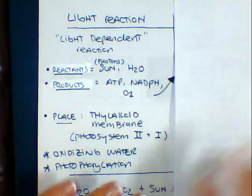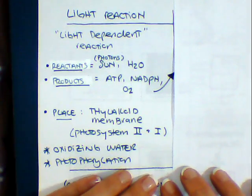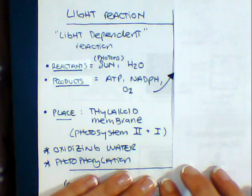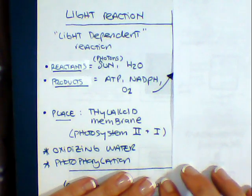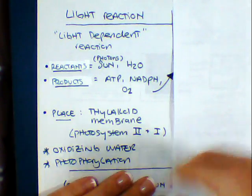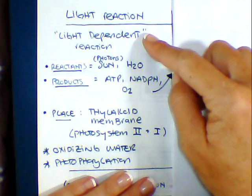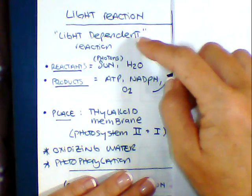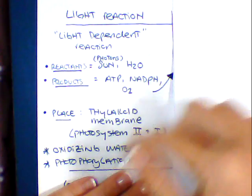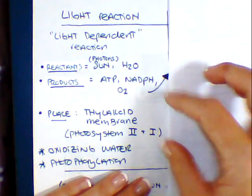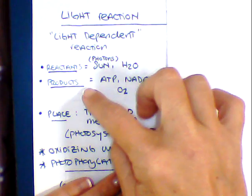Before we start with anything, let's go over our main characters in the play here. Light reaction, I want you guys to add to your notes, this is also known as a light dependent reaction because we depend on light in order for this whole thing to happen. You have your reactants versus your products.